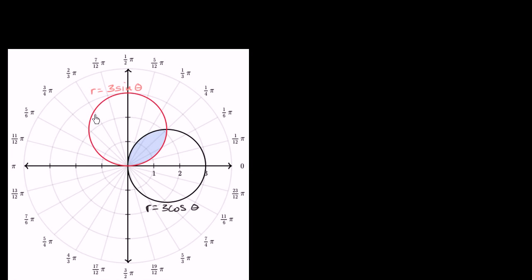We have two polar graphs here: r is equal to three sine theta and r is equal to three cosine theta. What we want to do is find the area shaded in blue — that's the overlap of these two circles. I encourage you to pause the video and give it a go.